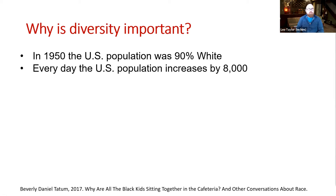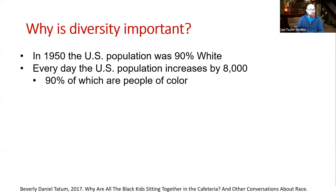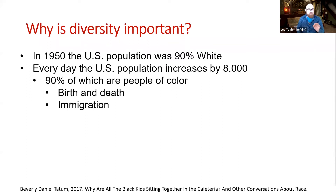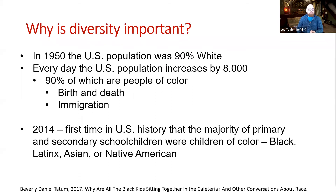Every day, the US population increases by 8,000 — 90% of those are people of color, meaning Black, Indigenous, or other people of color, basically anyone who's not white. This change is happening due to birth, death, and immigration. In 2014, it was the first time in US history that the majority of primary and secondary school children were children of color — meaning Black, Latinx, Asian, or Native American. 'Latinx' is a gender-neutral form of Latino/Latina, designed to be more inclusive, though there is controversy within the Latino/Latina community about that word.